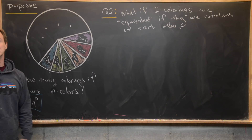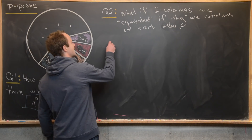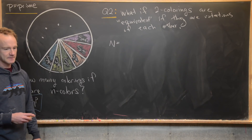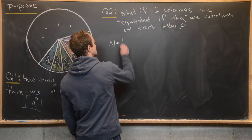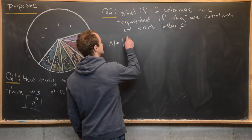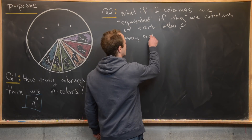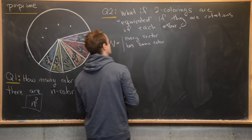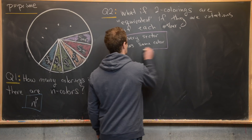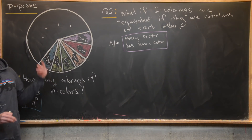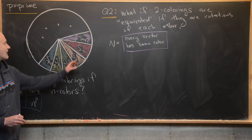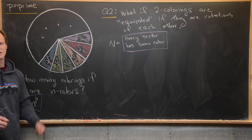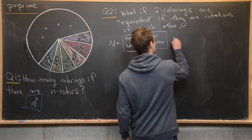Let's break this into two types. The first type is every sector has the same color. That's a boring coloring, but it's definitely one allowed coloring — every sector could be green, every sector could be red, every sector could be purple, and so on.